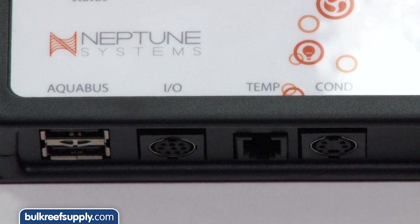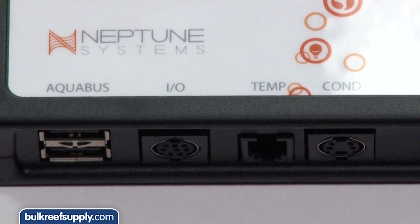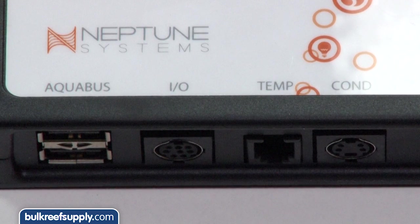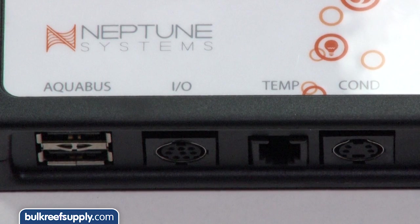Quick note on the other ports in the bottom of the probe module too. Like all apex modules, there are two aquabus ports to connect the module to your apex and daisy chain it to other modules. There is also an additional IO switch port which allows you to add additional switches.